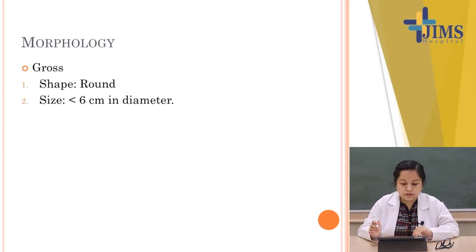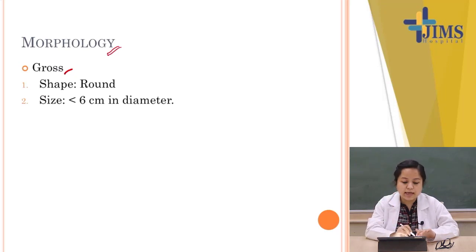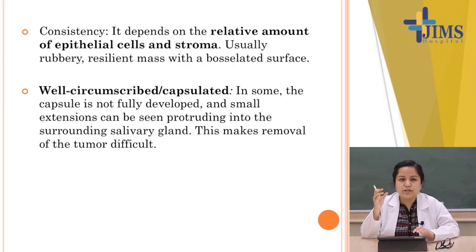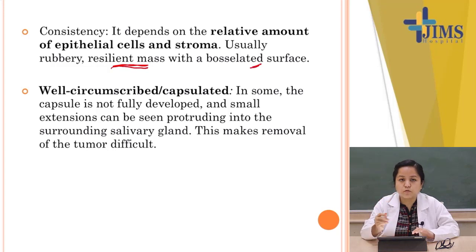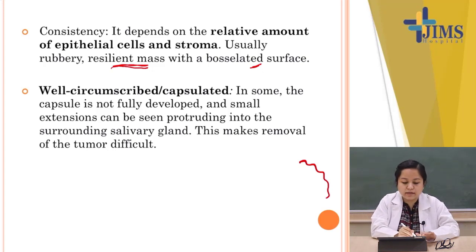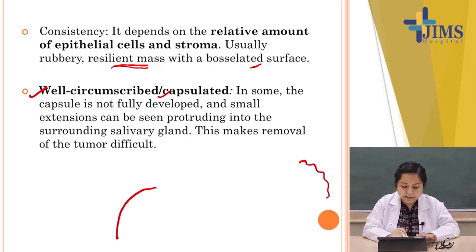Grossly, the tumor is round and can be more than 6 cm in diameter. Consistency depends on the proportion of epithelial versus stromal component — usually rubbery or resilient. The surface is bossulated, meaning lumpy. Importantly, it is a well-circumscribed or encapsulated tumor with a visible capsule around it.